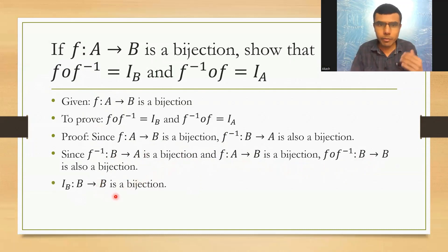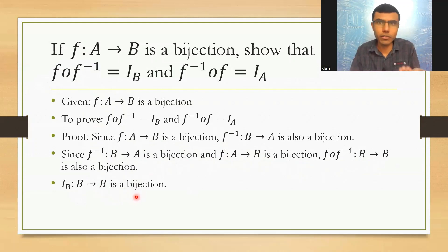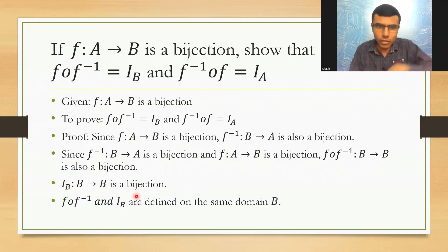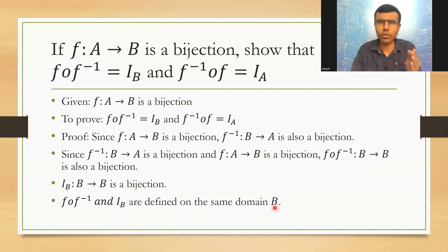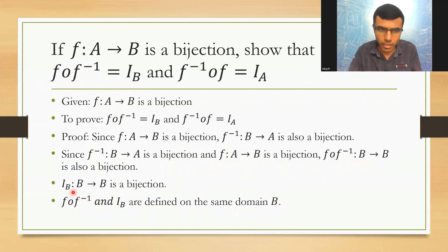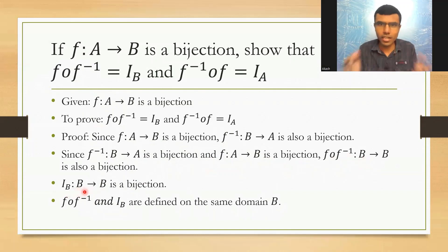Also, I_B maps B to B — as it is an identity function, I_B maps B to B is also a bijection. Therefore, these two functions, F∘F⁻¹ and I_B, are both defined on the same domain B.